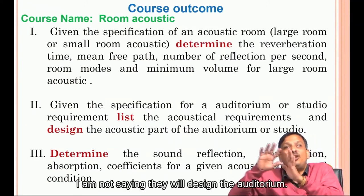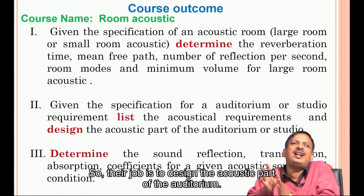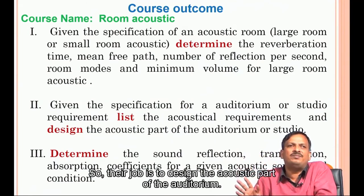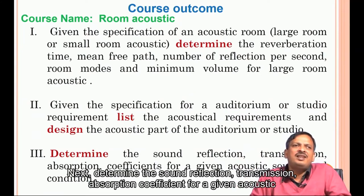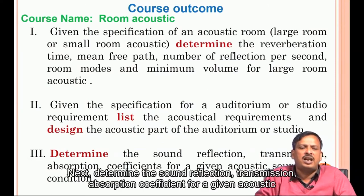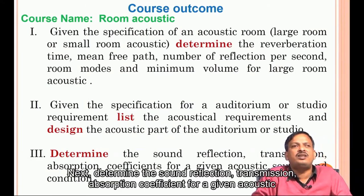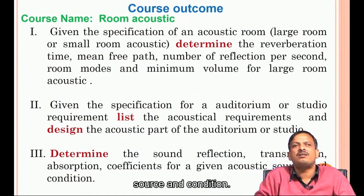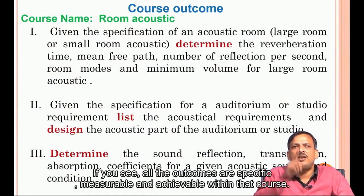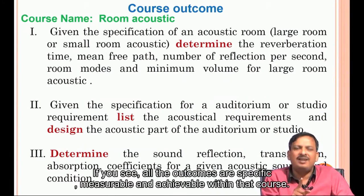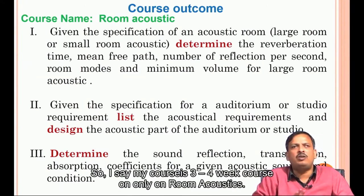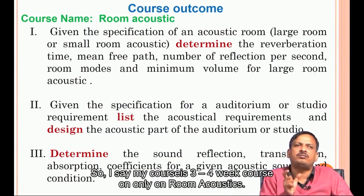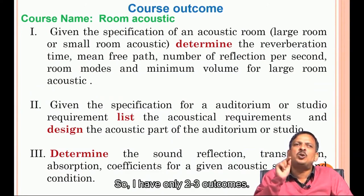I am not saying they will design the entire auditorium — their job is to design the acoustic part of the auditorium. Next outcome: determine the sound reflection, transmission, and absorption coefficient for a given acoustic source and condition. If you see, all the outcomes are specific, measurable, and achievable within that course. I have written down three outcomes.